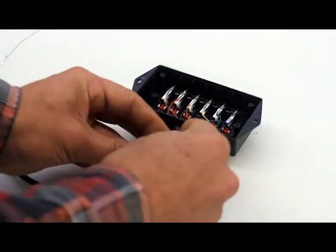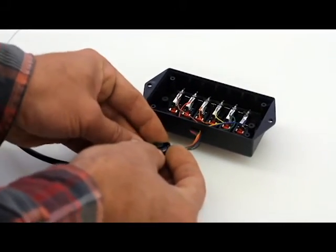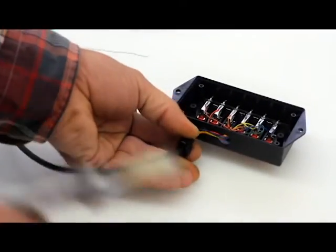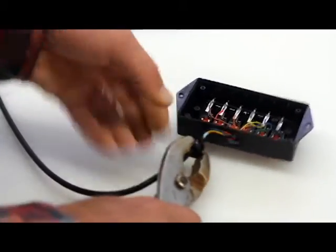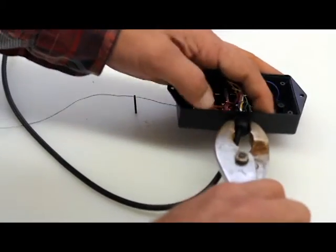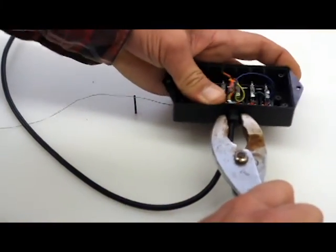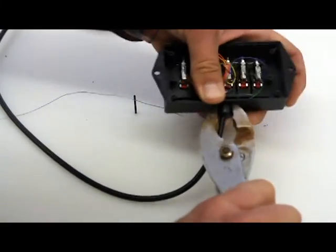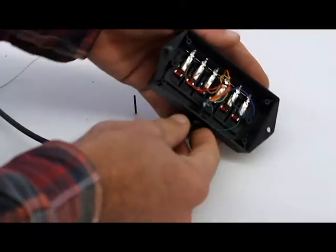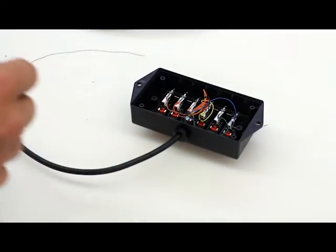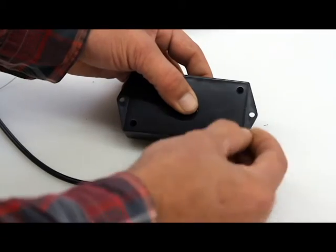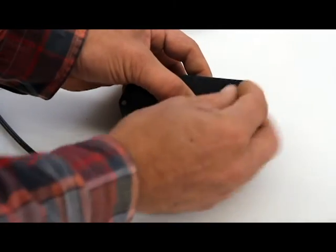Place your cord grip around the cable. Firmly compress it with pliers and push in until fully seated. Now, you can screw on the cover.